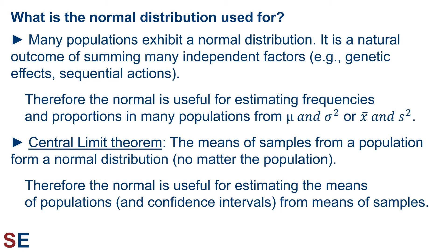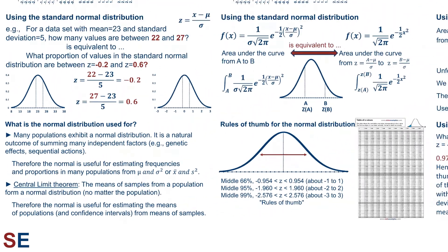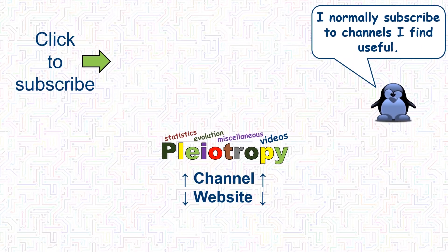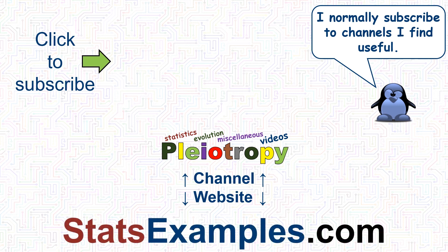The second reason to study normal distributions is because of the central limit theorem. This states that the means of samples from a population form a normal distribution, no matter what the population distribution looks like. Therefore, the normal distribution is useful for estimating the means of populations — it allows us to calculate confidence intervals, which are regions that describe where we think the population mean probably is, based on our sample mean and variance. Estimating the mean value of a population is the most common thing people want to do in statistics, and the central limit theorem allows us to use the properties of the normal distribution to do that. The normal distribution is the foundation of confidence intervals and t-tests, and many statistical tests require normally distributed values to work properly.